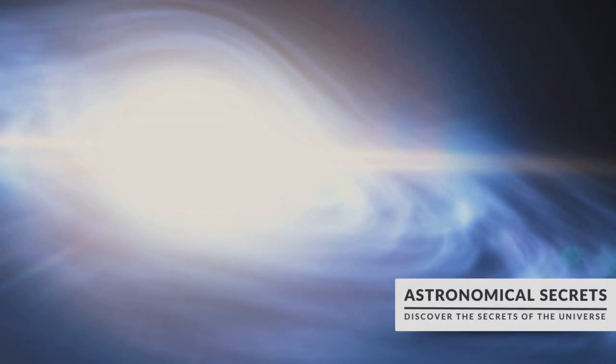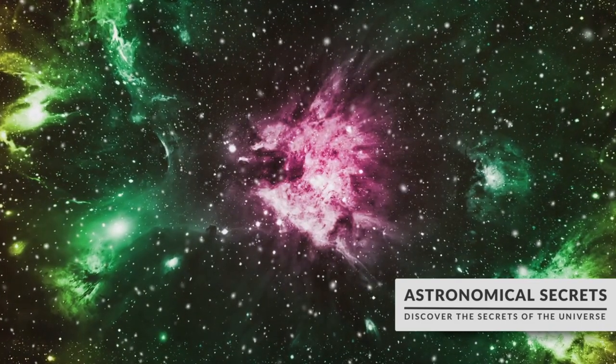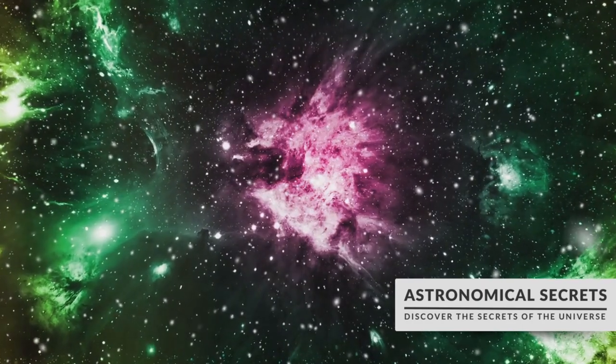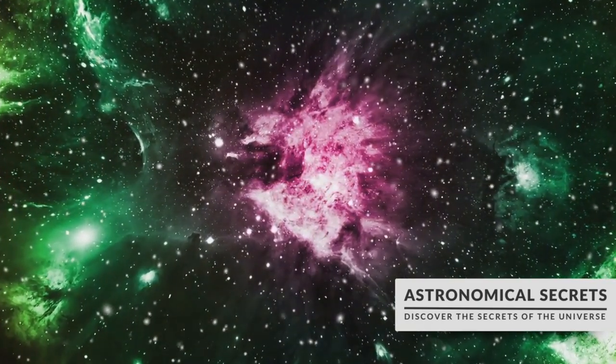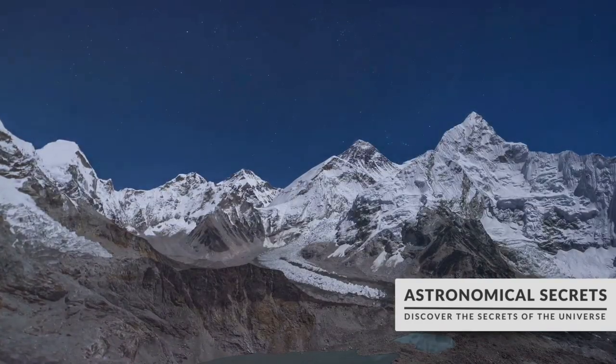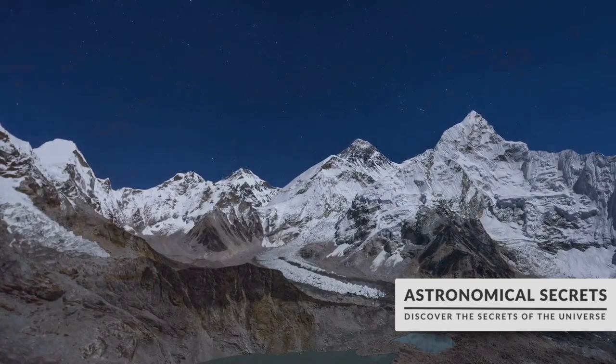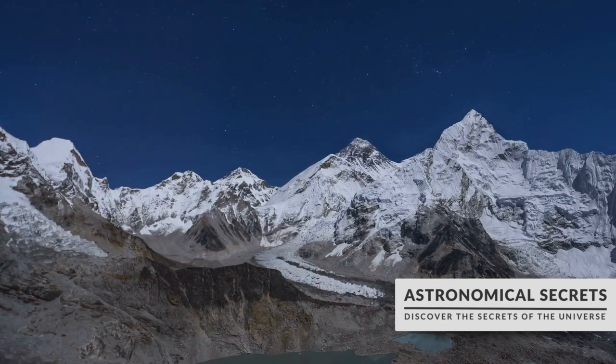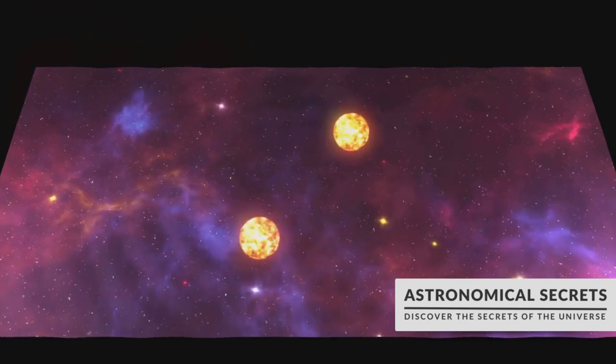The density of a neutron star is truly mind-boggling. Every cubic inch of a neutron star contains about a billion tons of matter. To put that into perspective, it's like compressing a mountain into a sugar cube. Imagine the weight of Mount Everest, the highest peak on Earth, compressed into a tiny cube of sugar. That's the kind of density we're talking about.